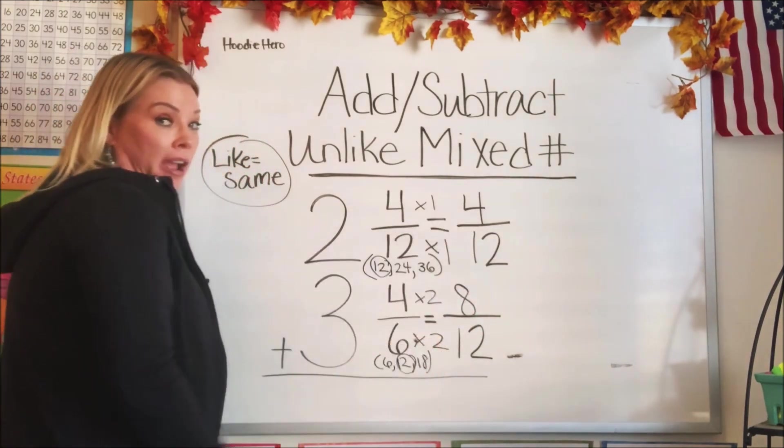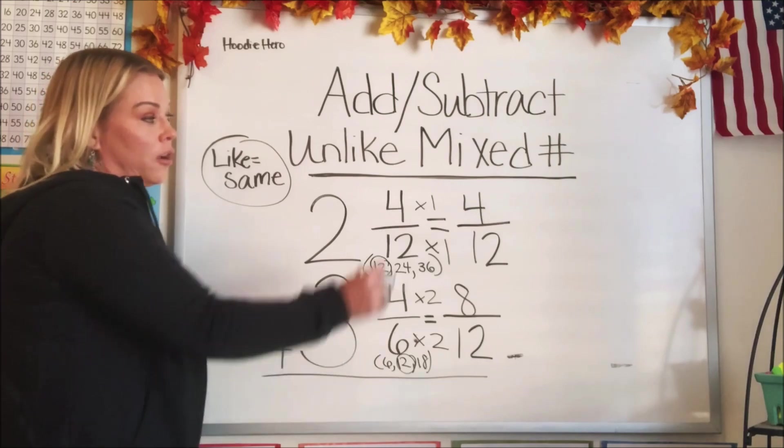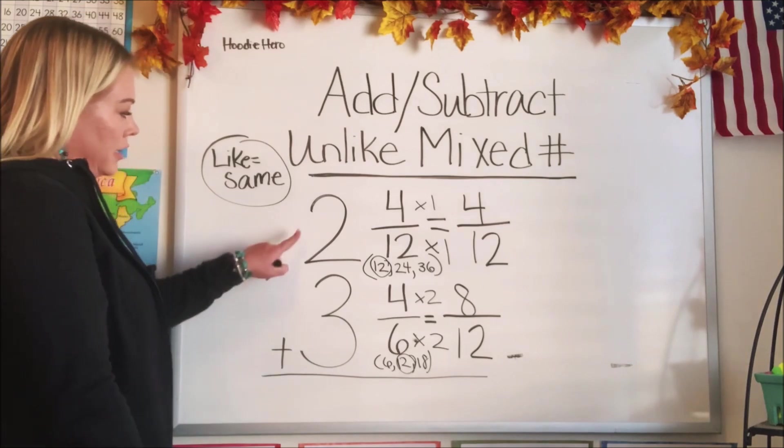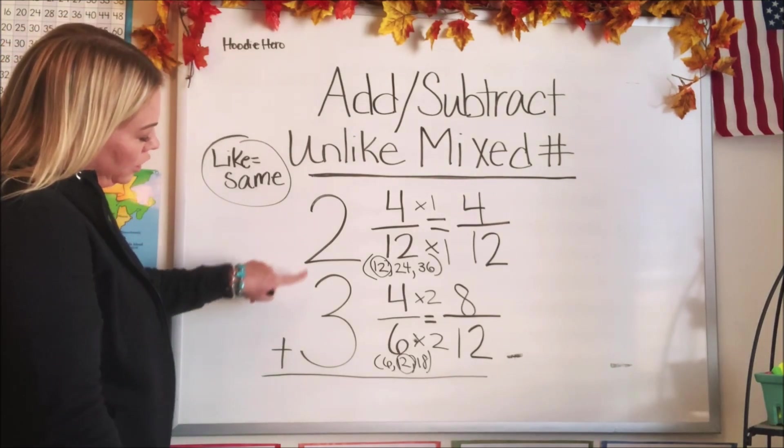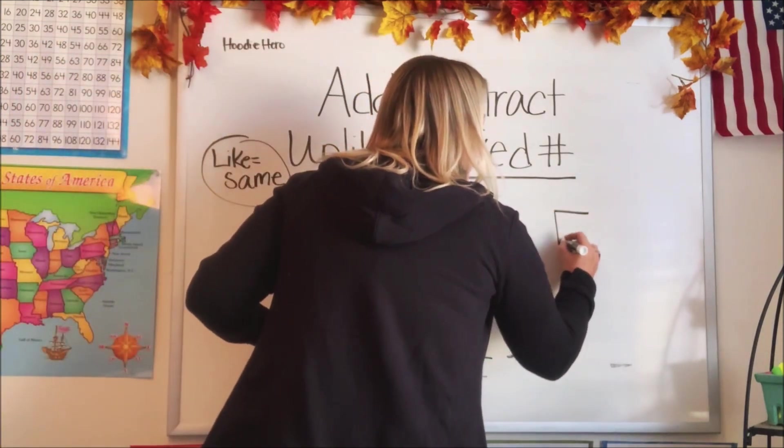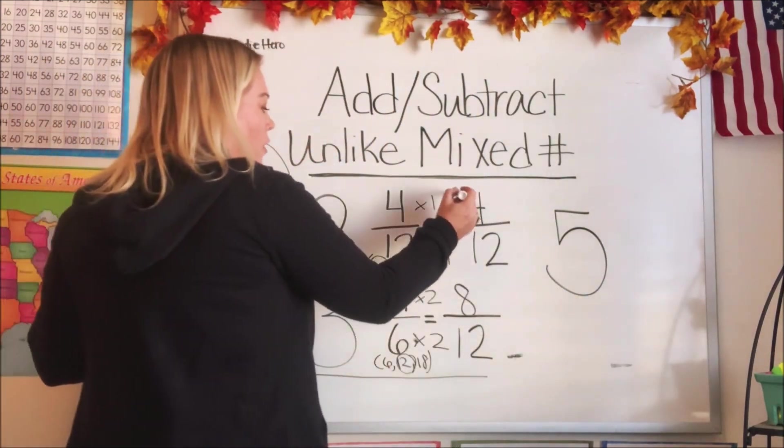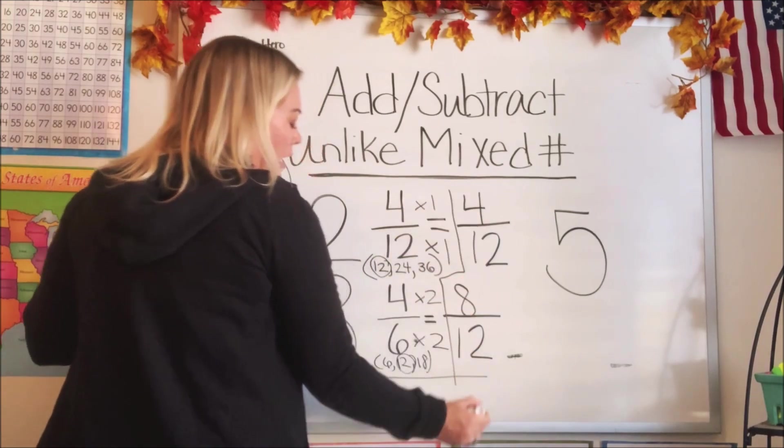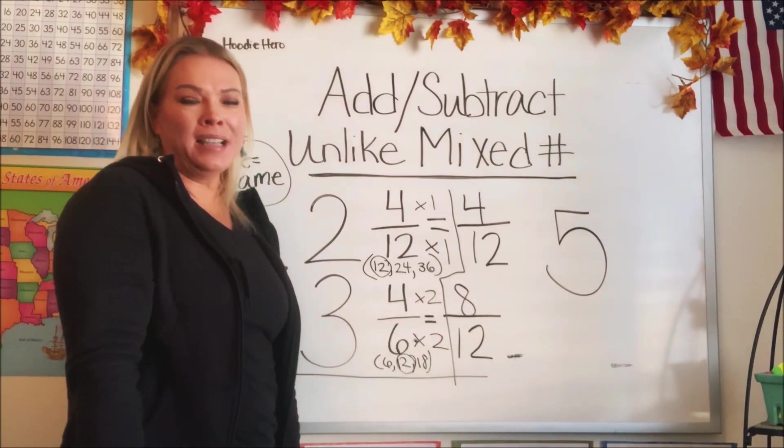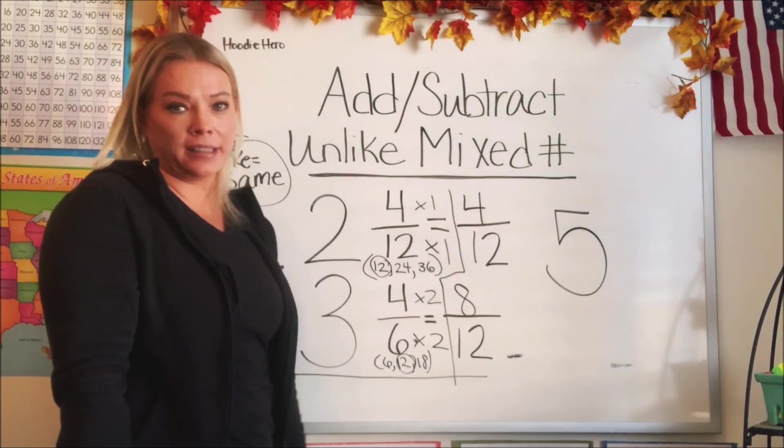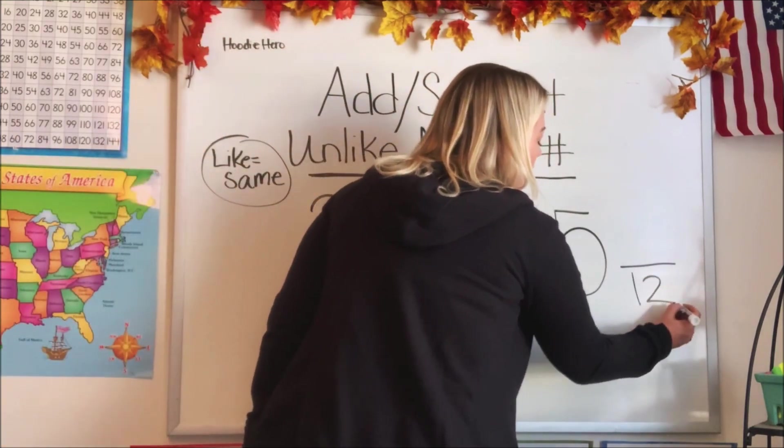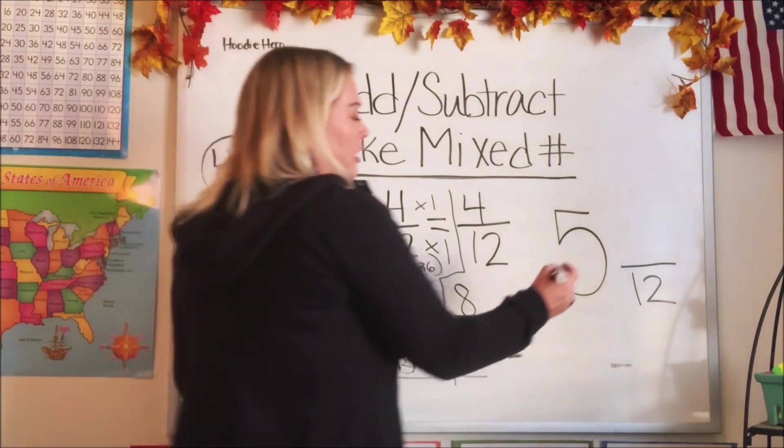Now are these like fractions? They are. So we can go ahead and add. Oh, this is going to be interesting. Let's go ahead and add our whole numbers. 2 plus 3 is 5. This is going to be basic math again. Now let's focus on these two fractions here. 4/12 and 8/12. What does that equal? What is 4 plus 8? We're always going to keep the same denominator. So we just need to add the numerators. 4 and 8 is 12.